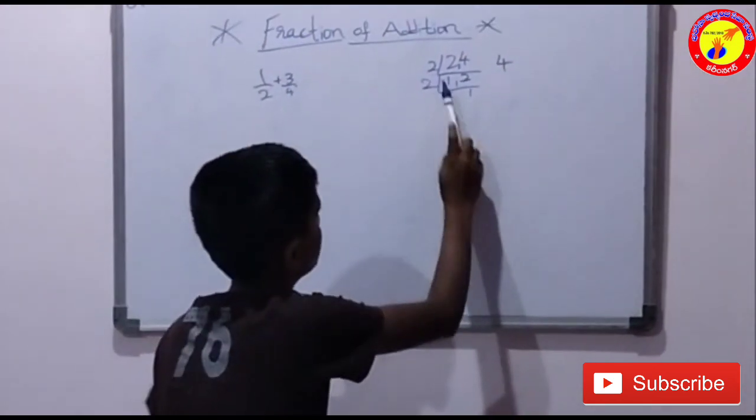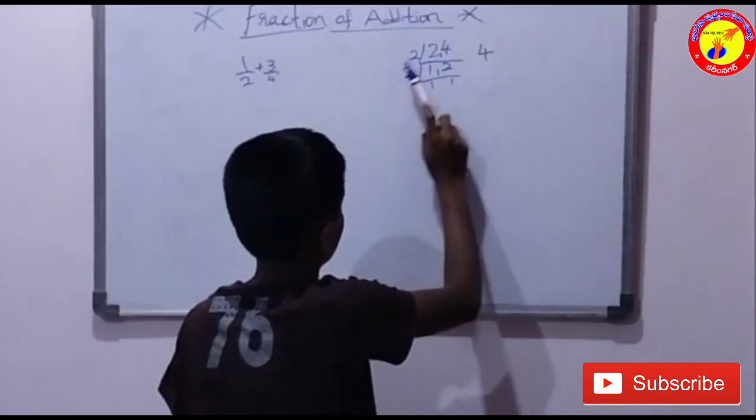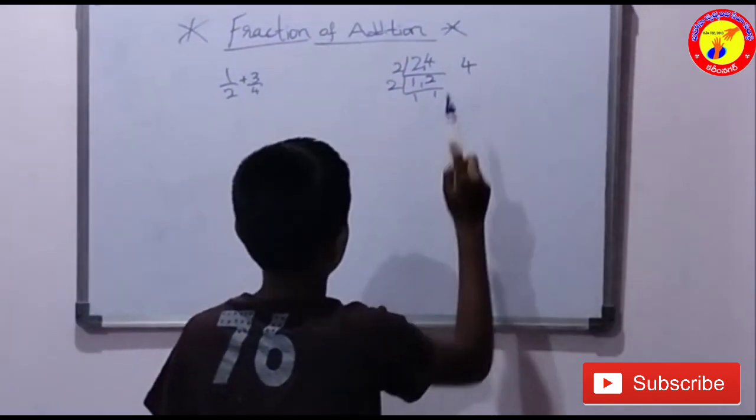2 on the 2, 2 to the 4. Again 2 on the 2. We should multiply it. The LCM is 4.